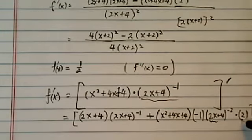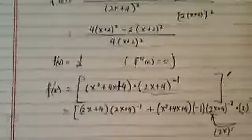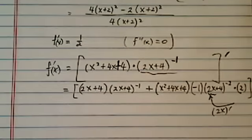This factor of 2 is from the derivative of 2x. Okay, we've got to use chain rule here. Now, what a mess here.